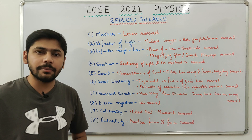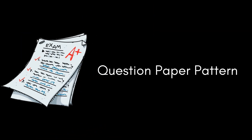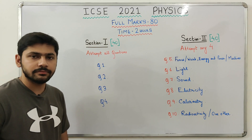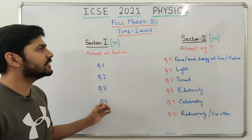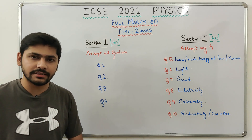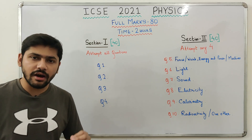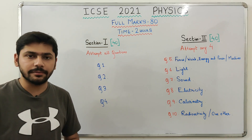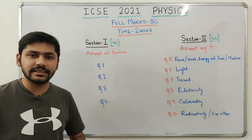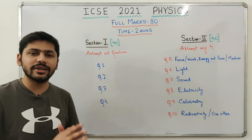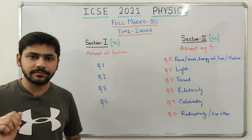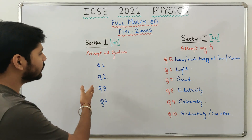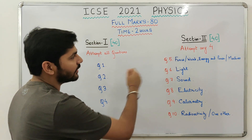Moving on to the question paper pattern. The ICSC 2021 physics board question paper will be 80 marks and you will get 2 hours to solve it, plus an additional 15 minutes to read the question paper. The paper is divided into two sections: Section 1 for 40 marks and Section 2 for 40 marks.